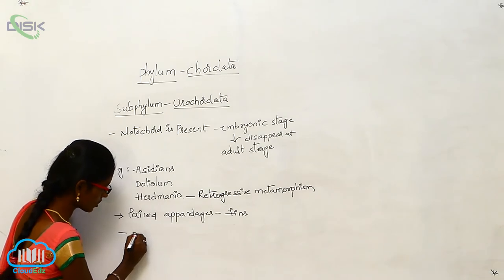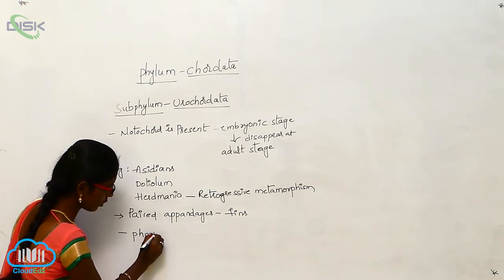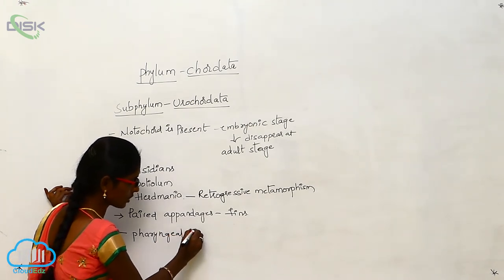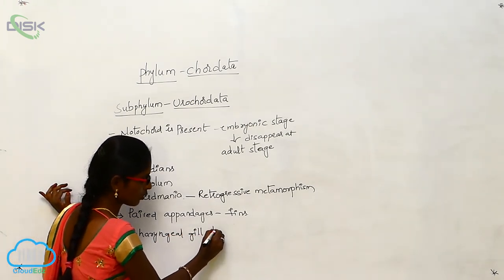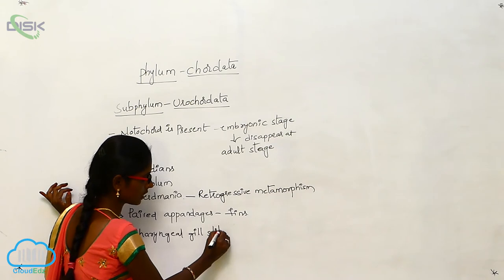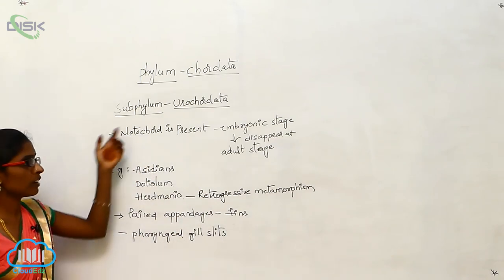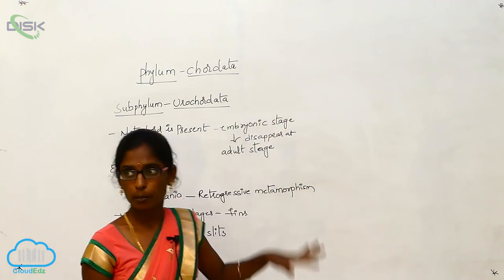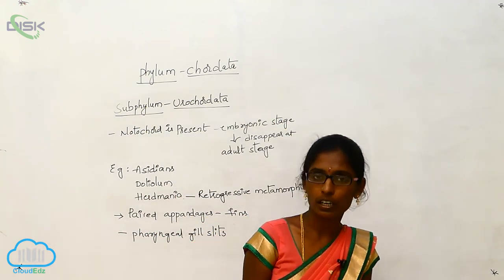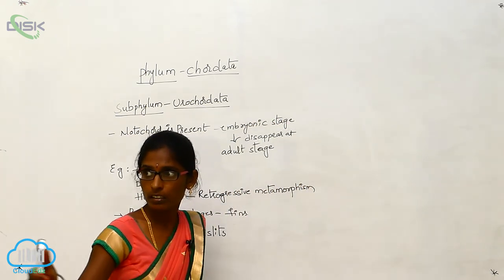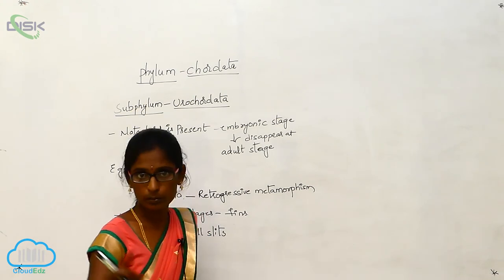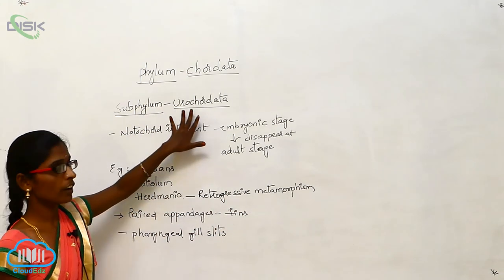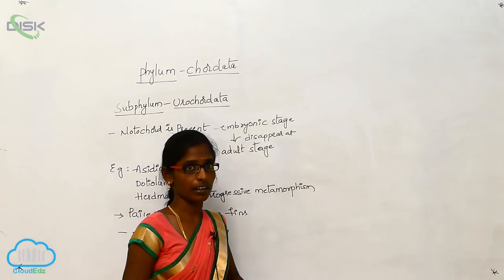Pharyngeal gill slits are also present in the Subphylum Urochordata. After that, we will discuss Subphylum Cephalochordata.